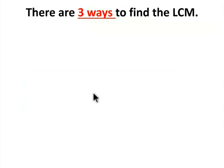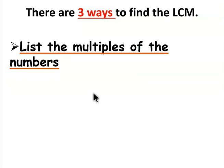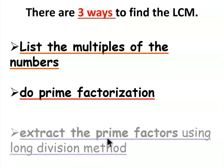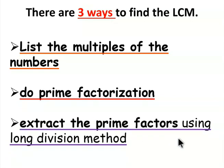There are 3 ways to find the LCM. First, list the multiples of the numbers. Second, do prime factorization. Third, extract prime factors using the long division method.